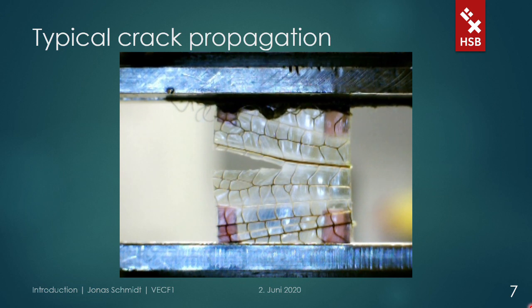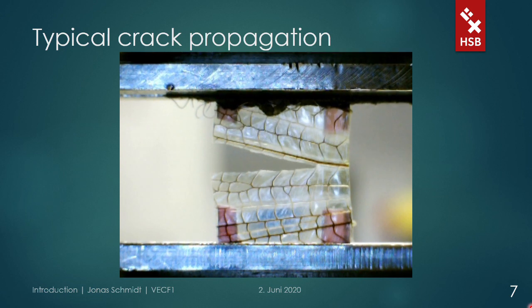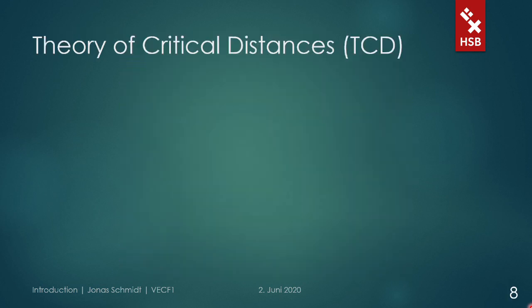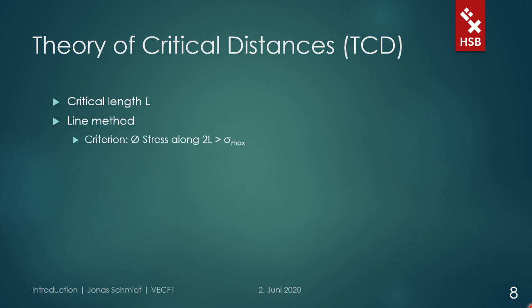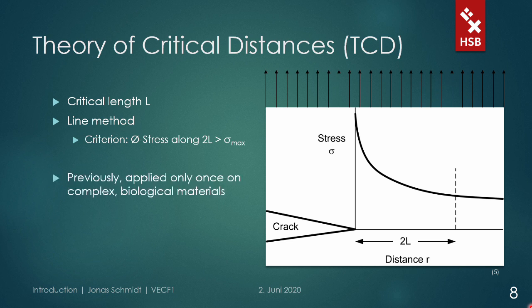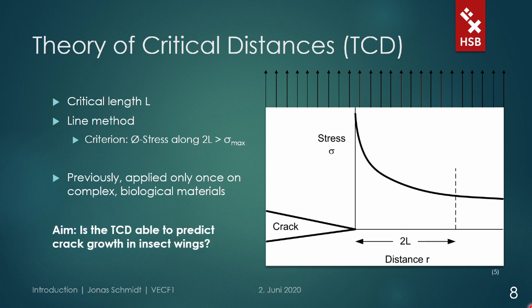We wondered if it would be possible to quantify and predict this effect via finite element analysis. One tool we know for this purpose is the theory of critical distances. It was decided to use the line method in this case, where the fracture criterion is that the average stress along two times the critical distance needs to be equal to or higher than the ultimate strength of the material. The TCD is widely accepted for standard engineering materials, but so far it was only applied once to a biological material, namely bone, which benefits from totally different toughening mechanisms than cuticle. Our aim was therefore to see if it is possible to predict crack growth in insect wings using the theory of critical distances.